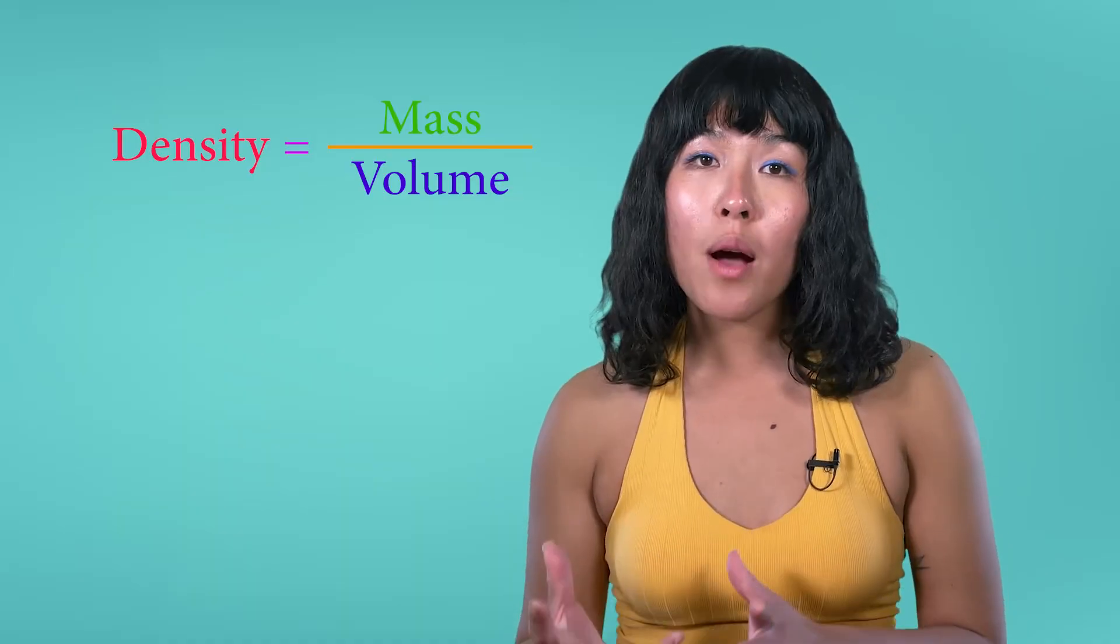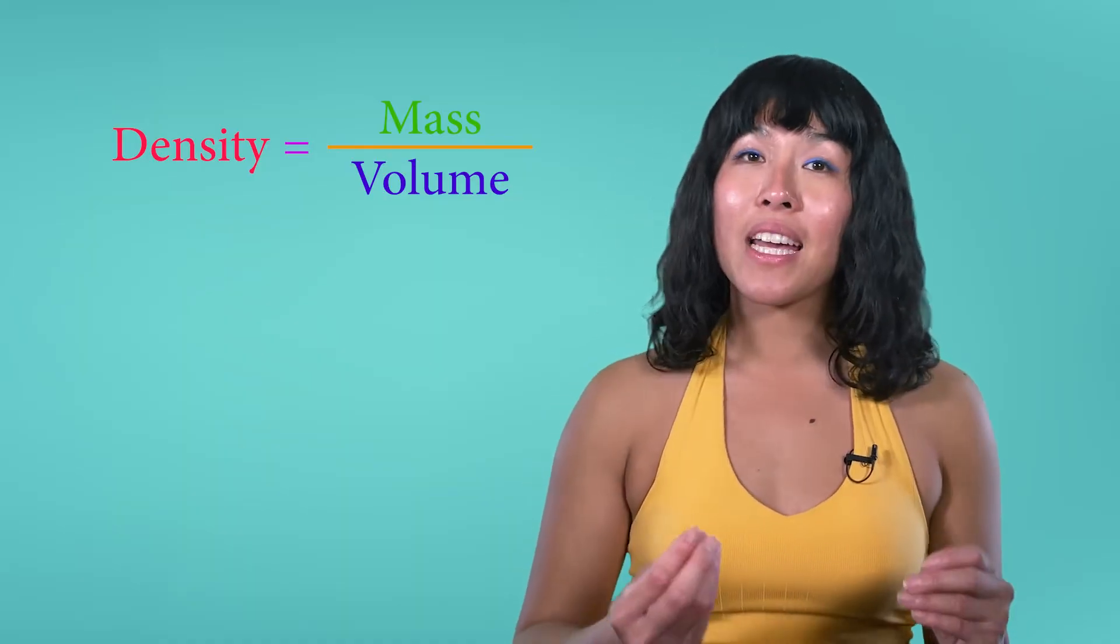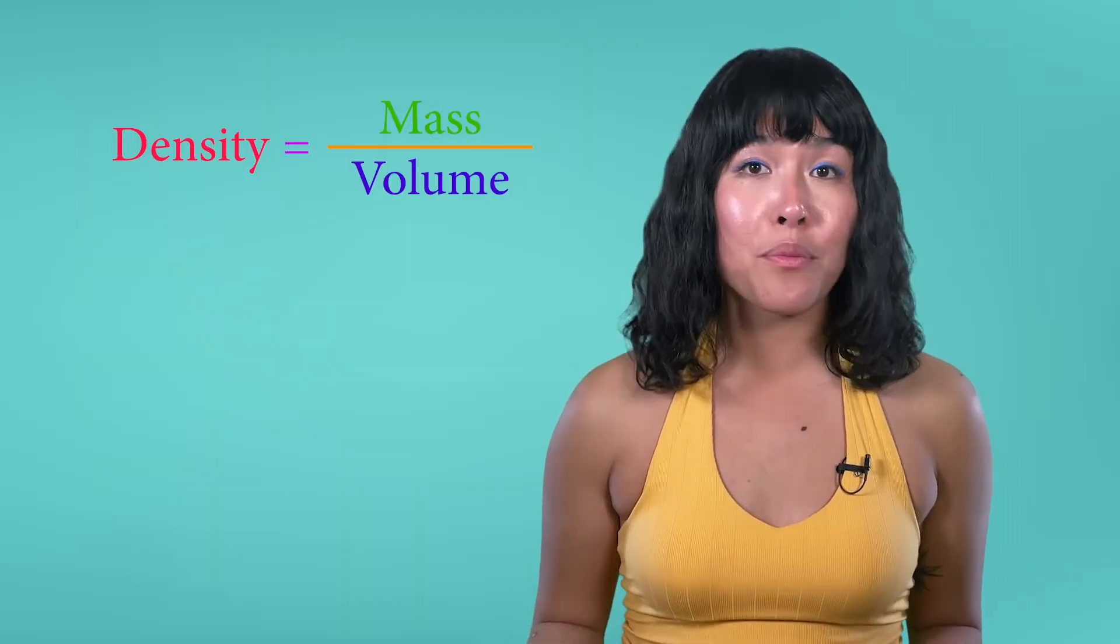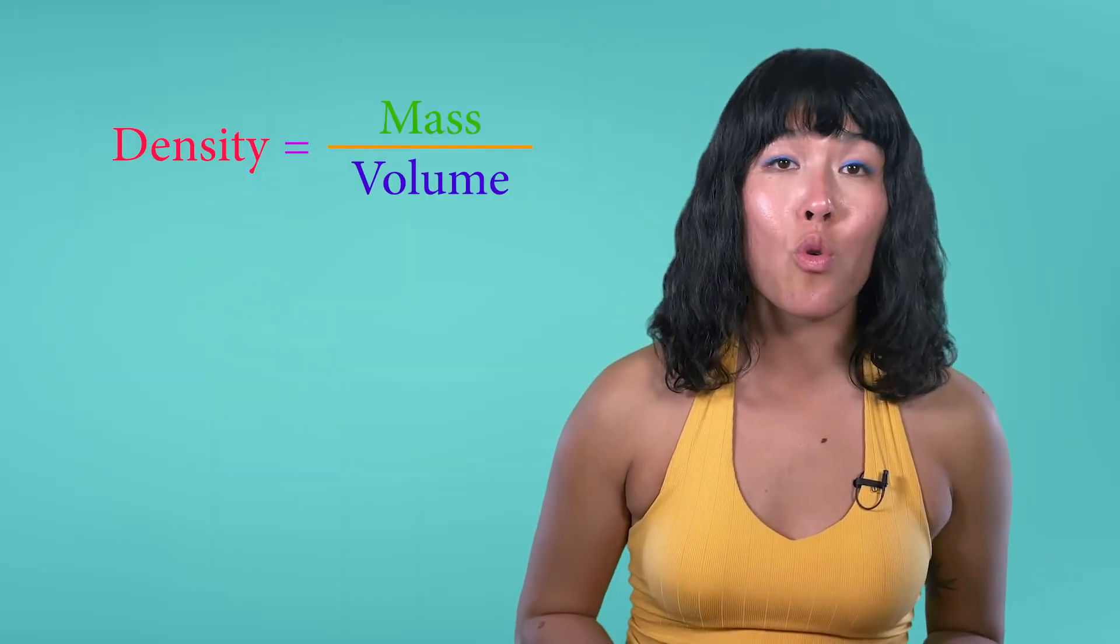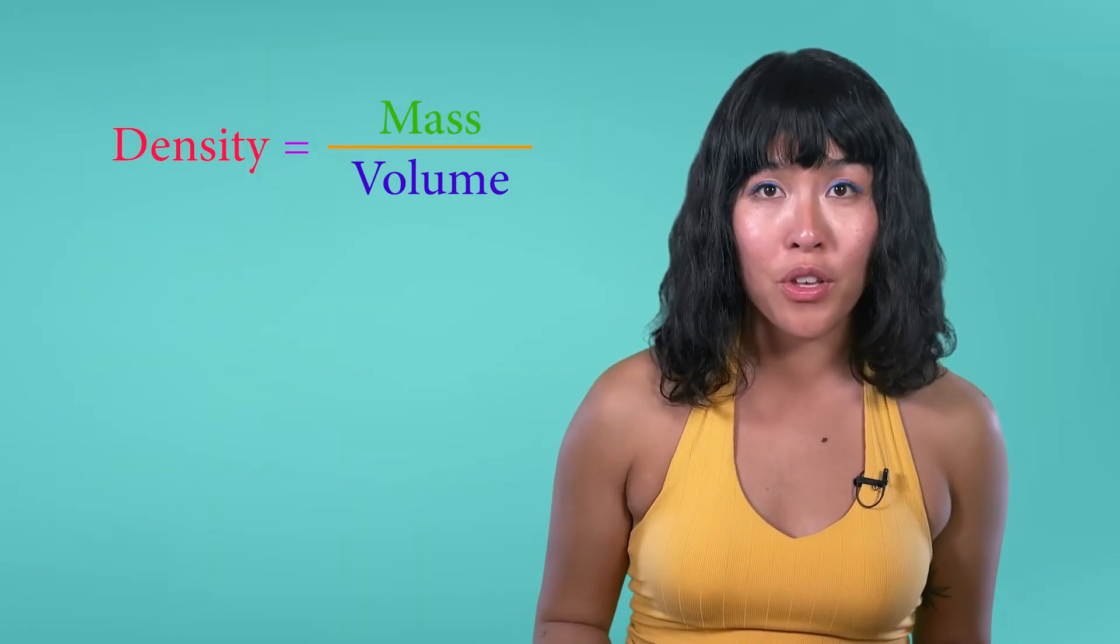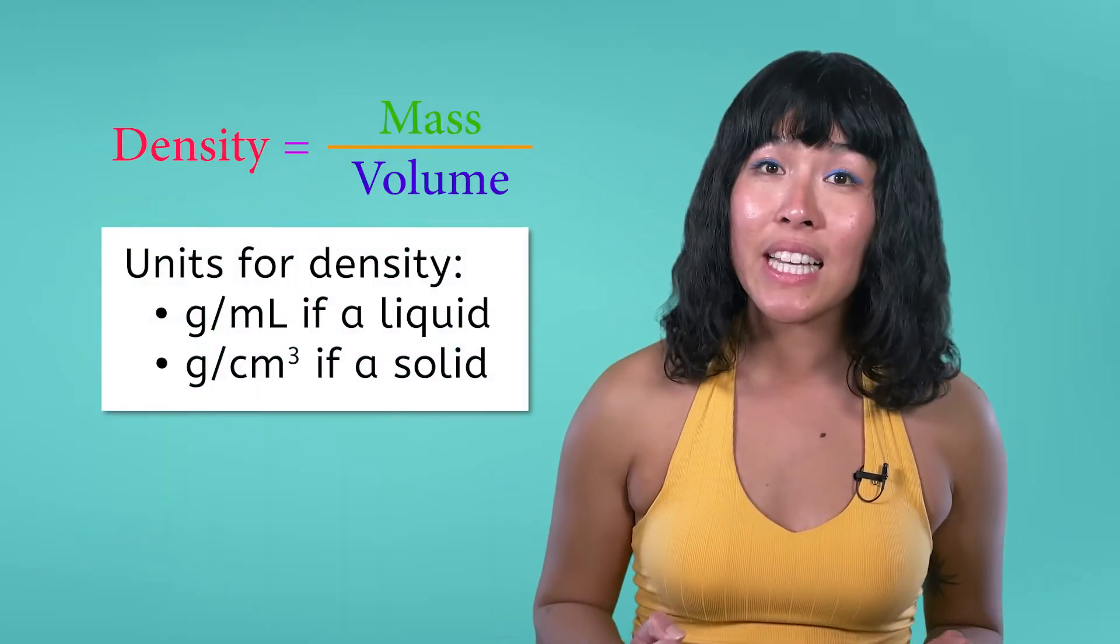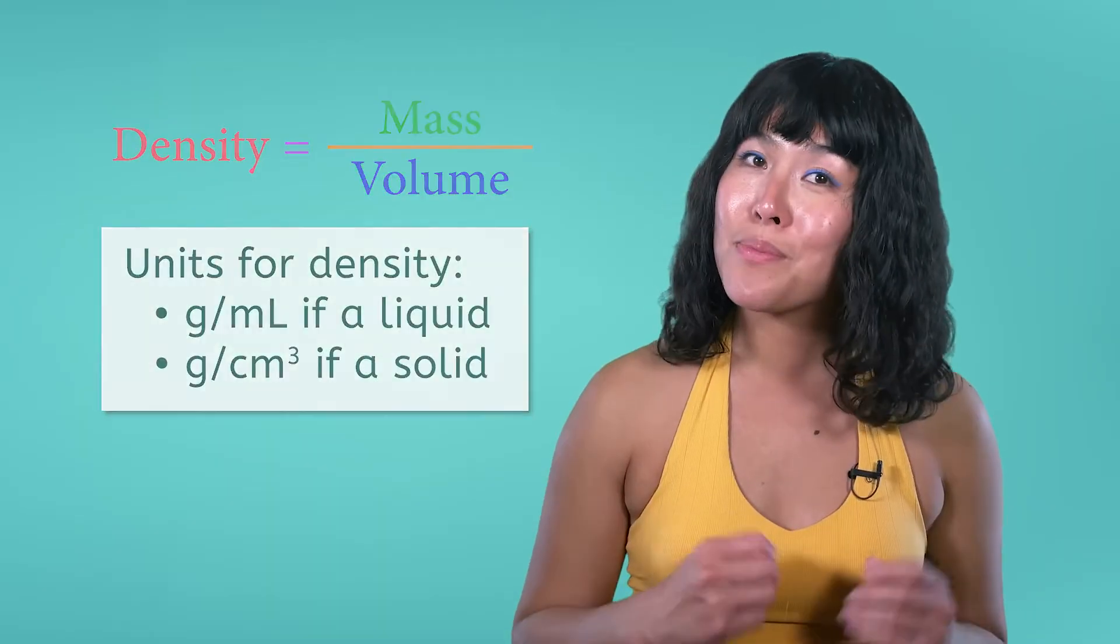The formula for density is density is equal to an object's mass divided by its volume. Usually, density is measured using grams for mass and milliliters or centimeters cubed for volume, which then gives density the unit grams per milliliter or grams per centimeter cubed.